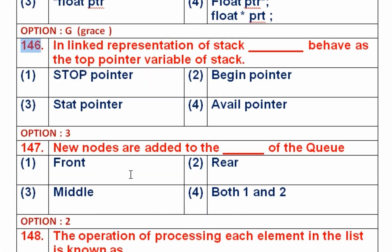Question number 146: In a linked list representation of stacks, which pointer variable acts as the top of the stack? Option 1 is top pointer, option 2 is beginning pointer, option 3 is start pointer, option 4 is null pointer. A stack has one closed end and one open end called the top. When represented using a linked list, data is inserted and deleted from the beginning of the list. To indicate the top of the stack — that is, the beginning of the linked list — we use a start pointer. So option 3 is the right answer.